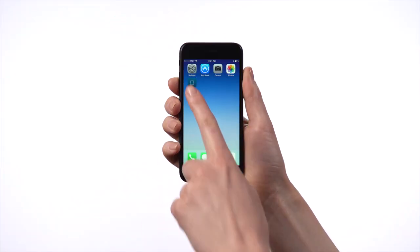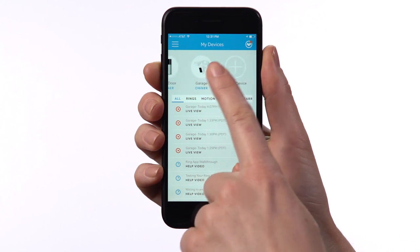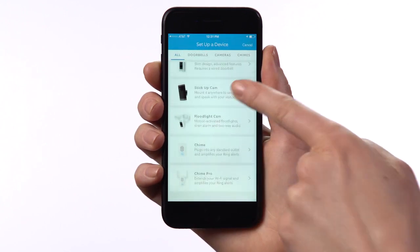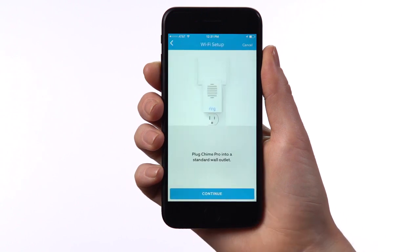Open the Ring app on your mobile device and tap Setup Device. Tap Chime Pro in the list of devices, then follow the in-app instructions to complete setup.